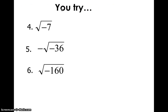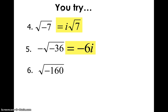Here are three more examples — pause the video, give them a try in your notes, and when you play it back I'll give you the answers. The square root of negative 7 is i root 7. Negative root negative 36: the square root of negative 36 is 6i, but with the negative in front of the radical, it's negative 6i. And the square root of negative 160 — when you take out a perfect square, you get 4i root 10.